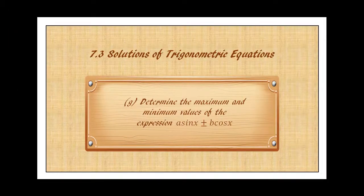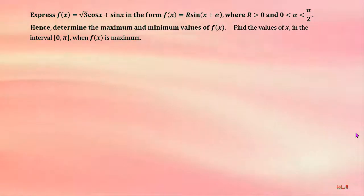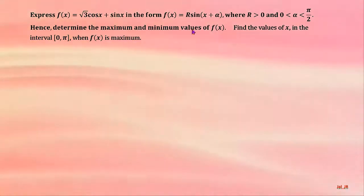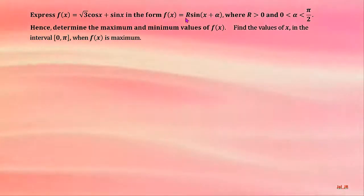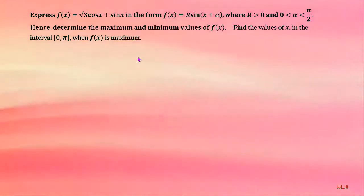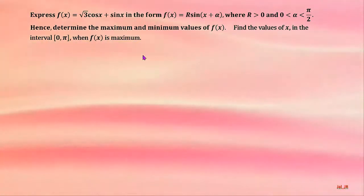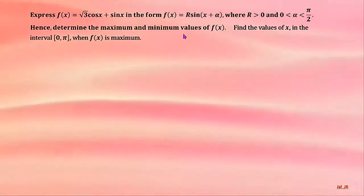Here is an example of finding the maximum and minimum values of the expression a·sine(x) ± b·cosine(x) = c. Express the given f(x) in the form r·sine(x + α), where r is greater than 0 and alpha is between 0 and π/2. Hence, determine the maximum and minimum values of f(x) and find the values of x in the interval from 0 to π when f(x) is maximum.